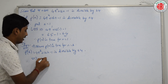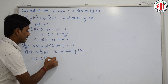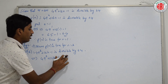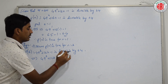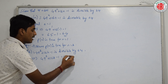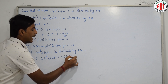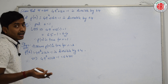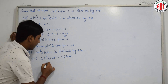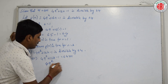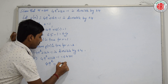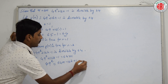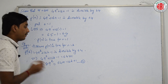From the assumption, we can write 49^k = 64m − 16k + 1. We will use this expression in the next step.